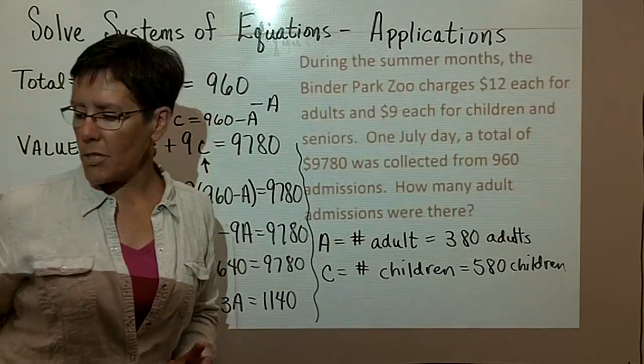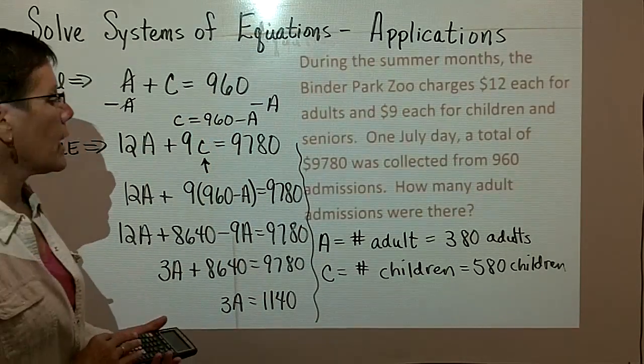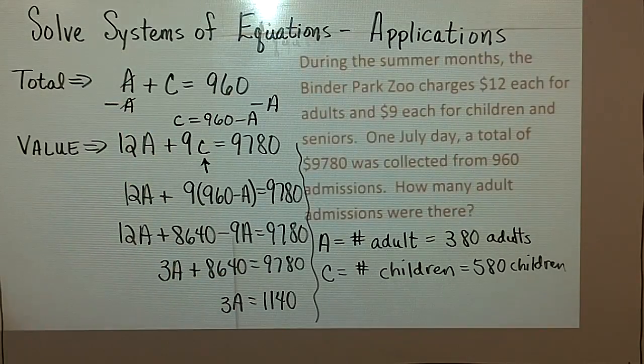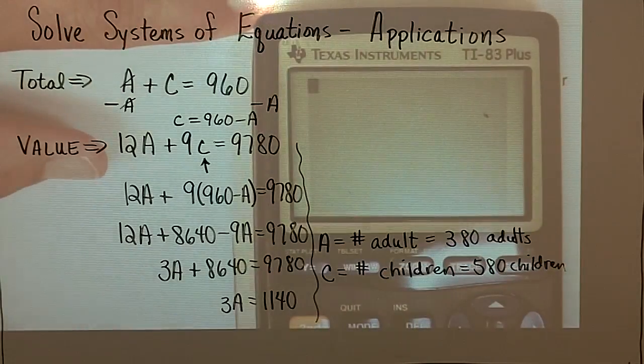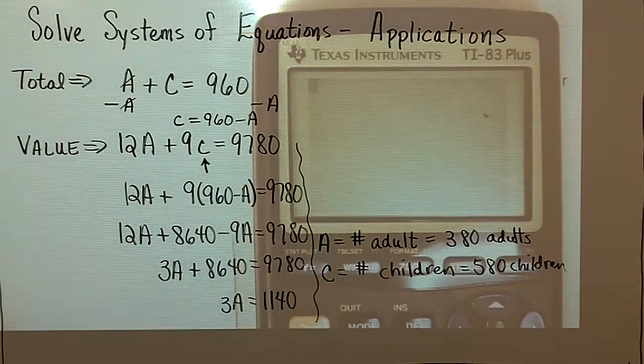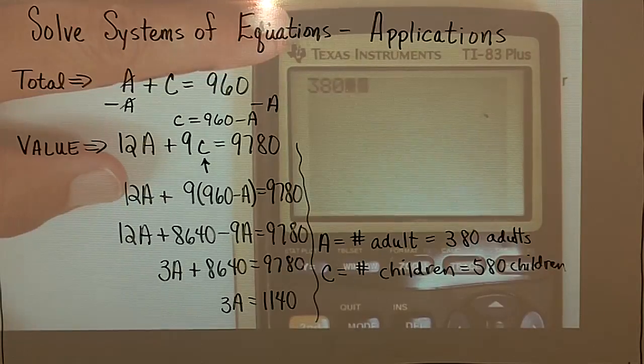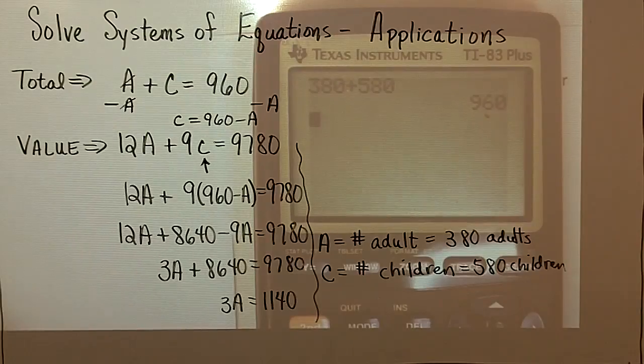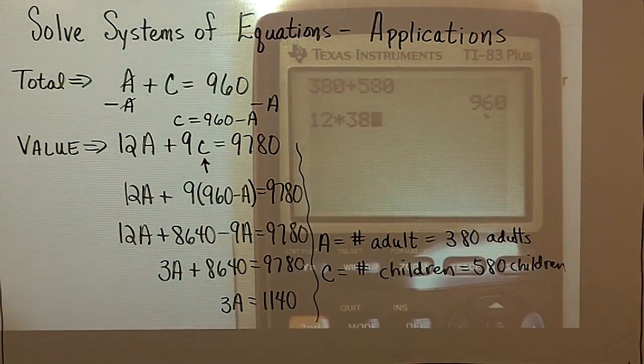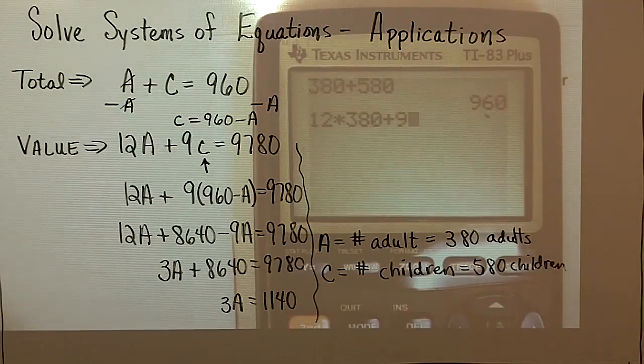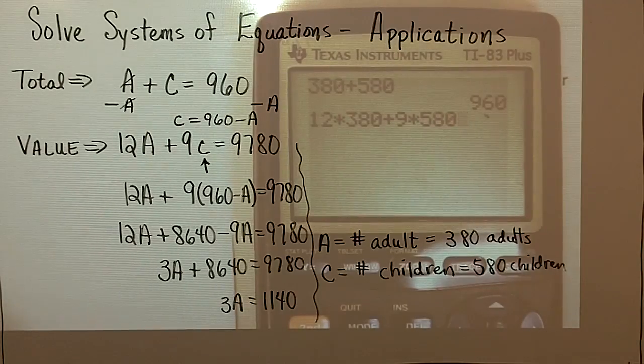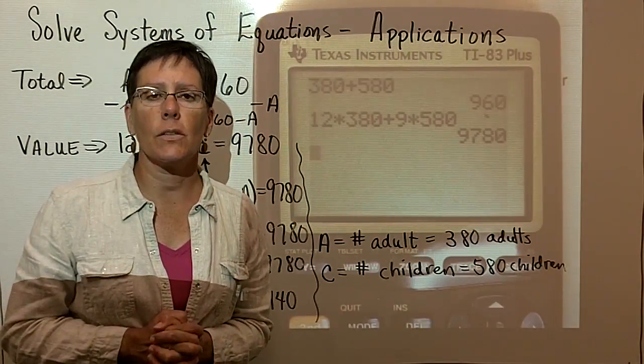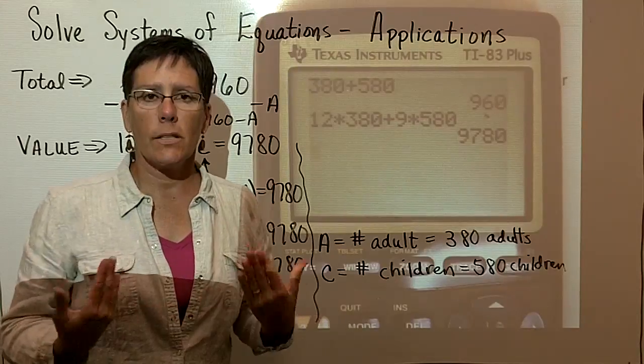And then finally, I'm going to try to demonstrate with my graphing calculator. I do know that the 380 plus the 580, here's my first check, is 960 folks. And then at $12 a person times 380 adults plus $9 a person times 580 children, I'm checking my solutions in the two original equations to see if they check.